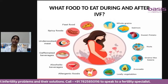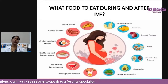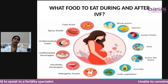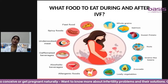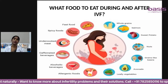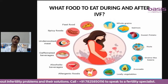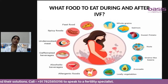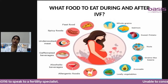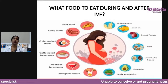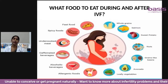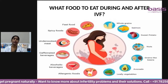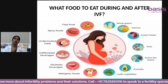During and after the IVF cycle, eat a well-balanced healthy diet ensuring all micronutrients, vitamins, and minerals are included. Recommended foods include whole grains, salmon, sweet potato, nuts, berries, avocado, leafy vegetables, and fruits. Avoid packaged food, fast food, spicy food, undercooked meat, high-mercury fish like swordfish or mackerel, caffeinated and alcoholic beverages, and any foods you are allergic to.